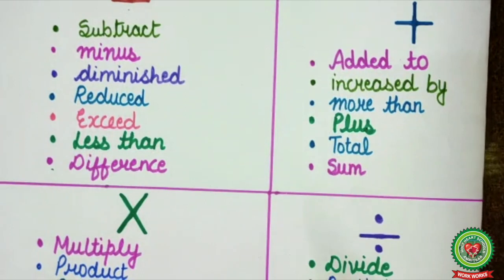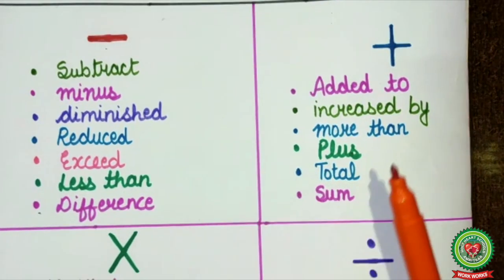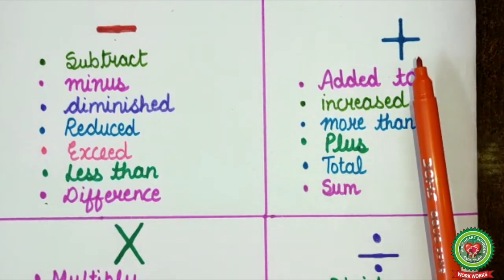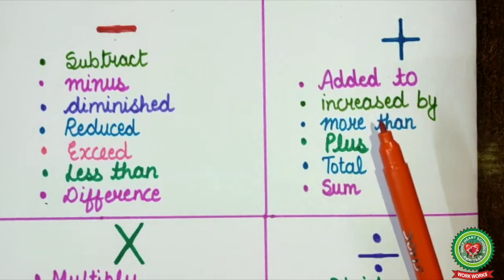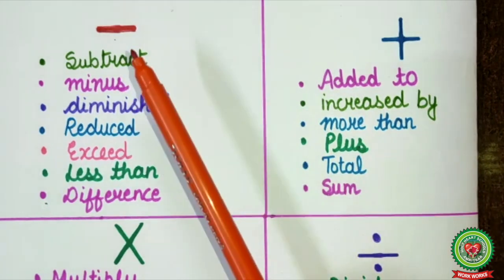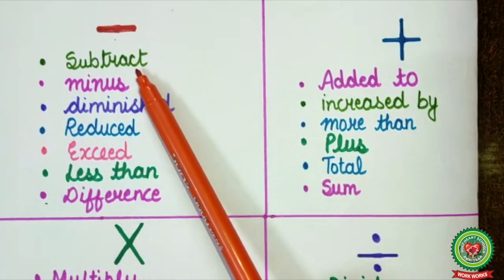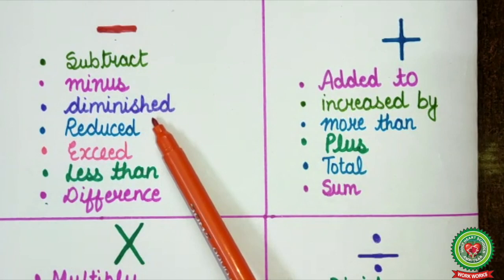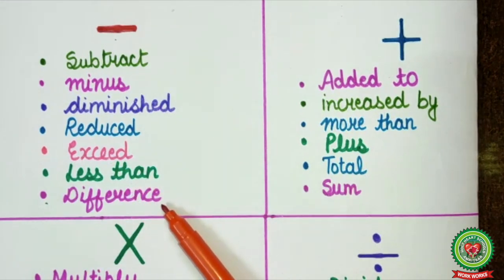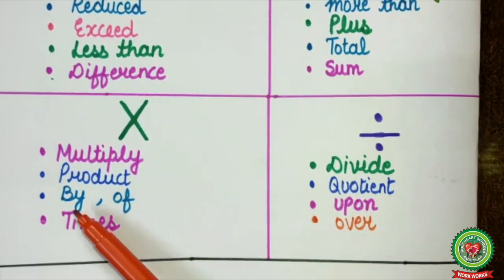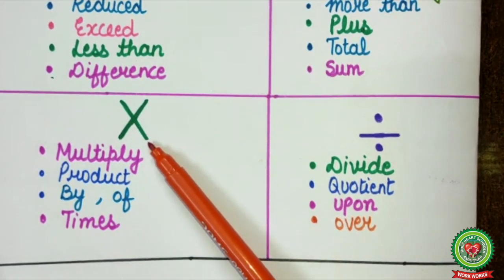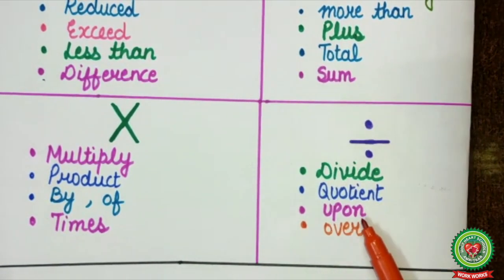Here, you must remember these words to identify these operations. We know there are 4 mathematical operations. For plus, you have to remember: added to, increased by, more than, plus, total sum. For minus, remember: subtract, minus, diminished, reduced, exceed, less than, and difference. And multiply: product, by, of, times — these words indicate the sign of multiply. And divide: quotient, upon, over — such words indicate the symbol of division.